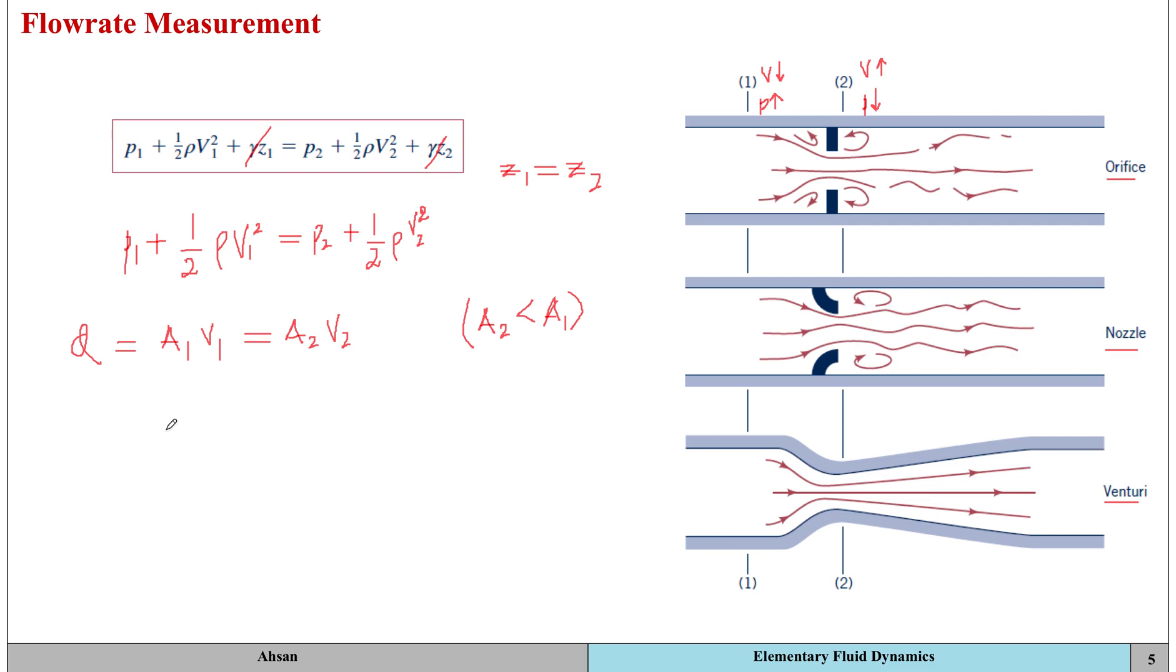We can find out the flow rate, which is equal to the area at section 2 multiplied by this term. This term we accounted for by finding the velocity at section 2. What this equation shows is that all you need to do is find the pressure difference, which is p1 minus p2.